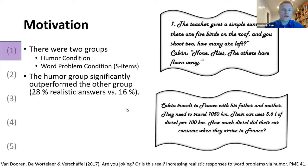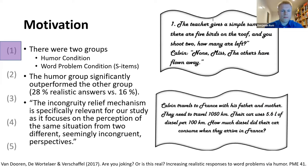Intriguing result was that the humor group significantly outperformed the other group in solving the P-items. And they explained this like this: The incongruity relief mechanism is specifically relevant for our study as it focuses on the perception of the same situation from two different, seemingly incongruent perspectives.